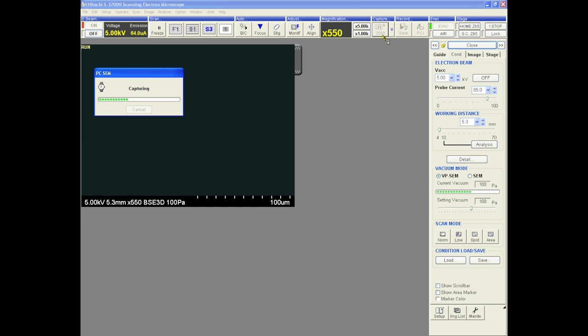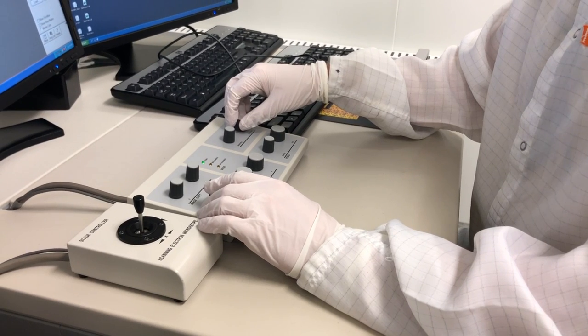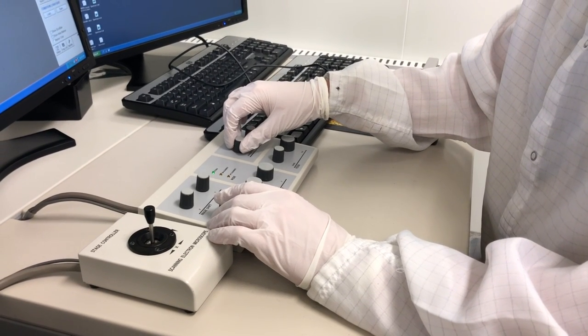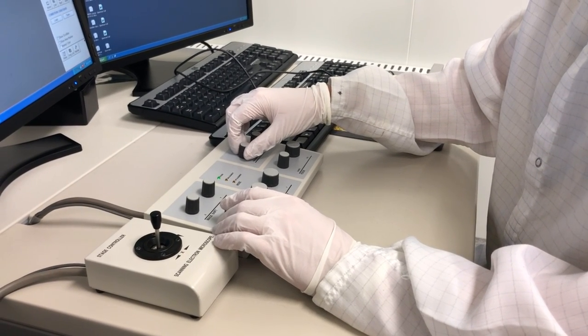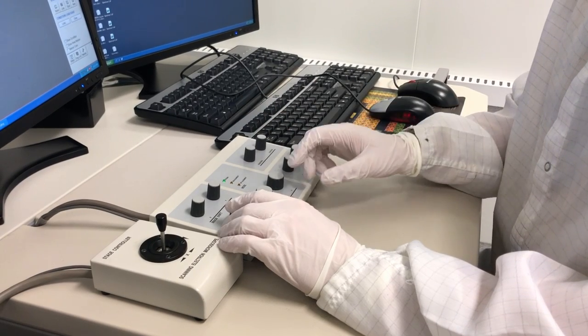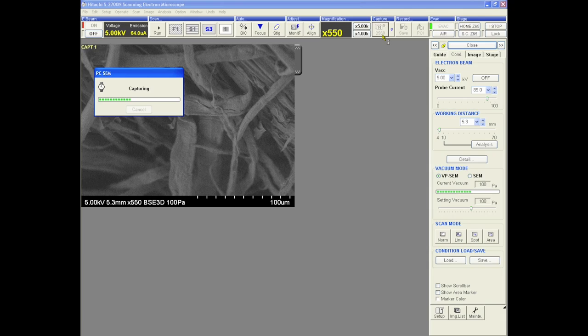Once you are able to see an image, continue adjusting the focus, voltage, vacuum level, probe current, brightness and contrast, aperture and stigma to create a clear picture. Refer to notes from the training session for details.